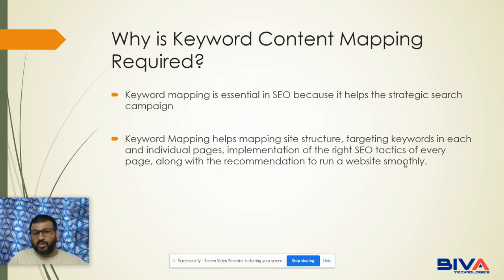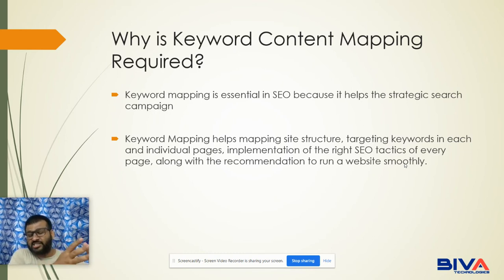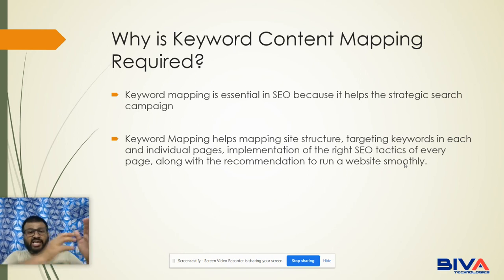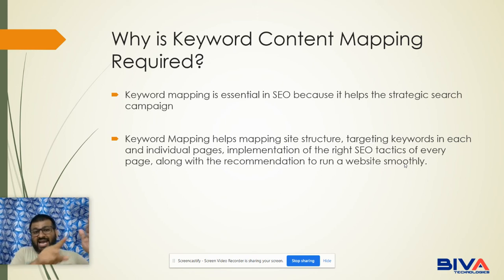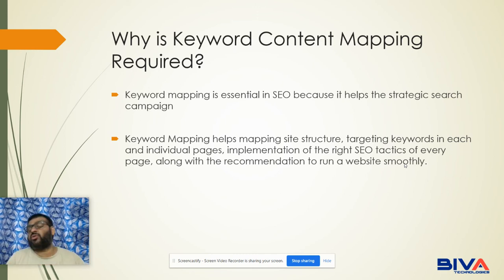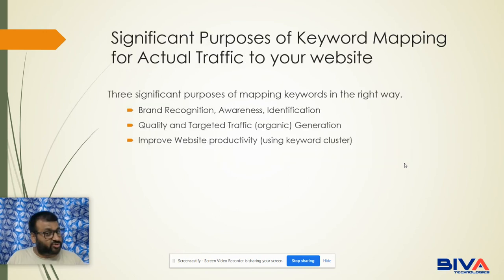Here is an example of a content flow: if your main keyword is on the home page and you have supporting content in your blog section, you can create a flow from your home page to your blog or content section. This provides relevancy and helps both search engines and users rank your website naturally in search engine result pages.